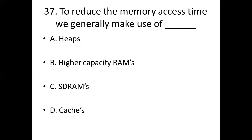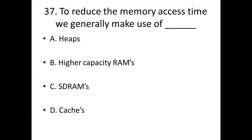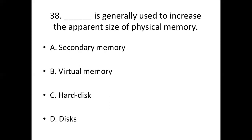Thirty-seventh bit: To reduce the memory access time, we generally make use of dash. Option A: HIPS. Option B: Higher capacity RAMs. Option C: SD RAMs. Option D: Caches. Answer: Option D, Caches.